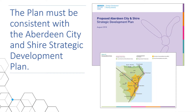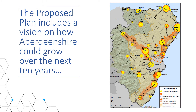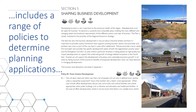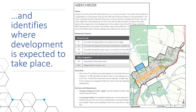The plan must be consistent with the Aberdeen City and Shire Strategic Development Plan, which provides a broader regional overview and sets out how much housing and employment land is required across the region. The proposed plan sets out how places in Aberdeenshire could grow over the next 10 years. It includes a vision statement, a range of policies used to determine planning applications, and it identifies exactly where development is expected to take place.